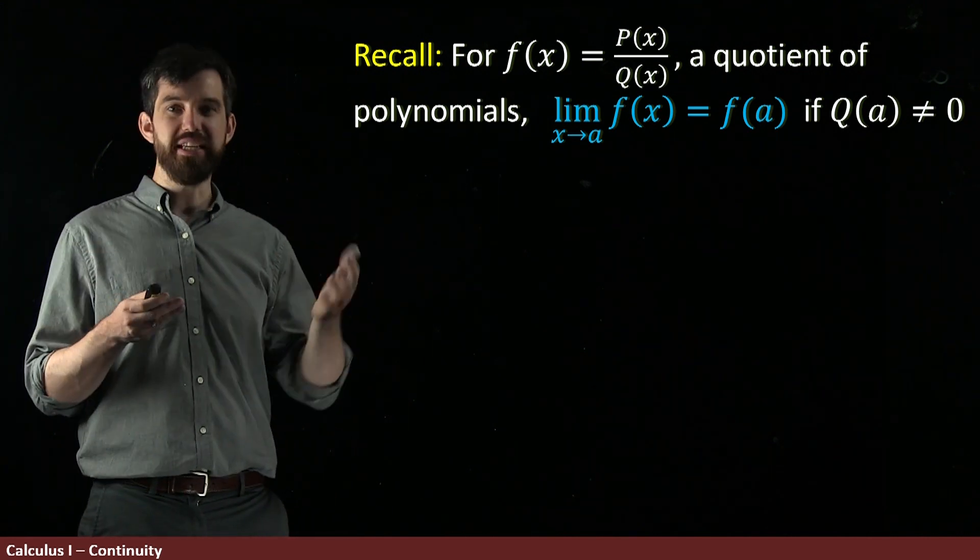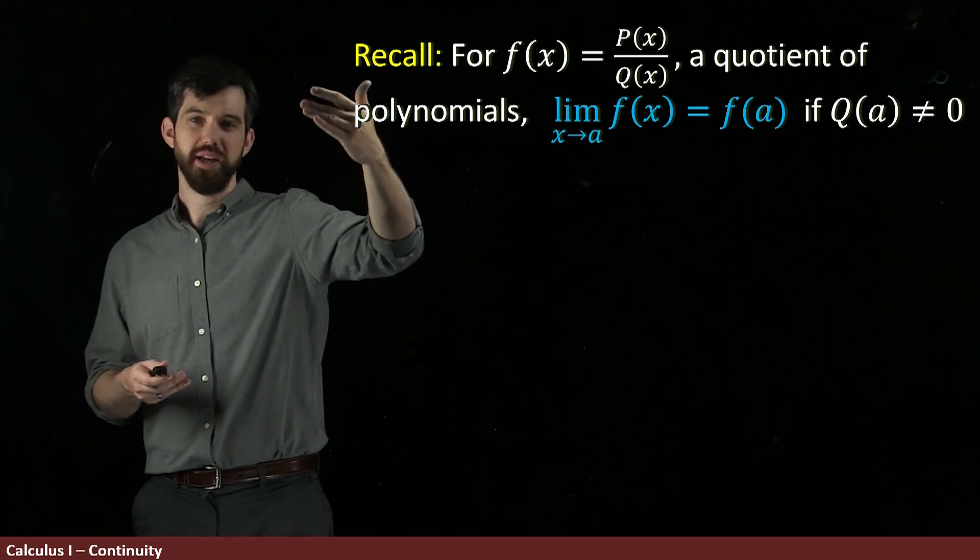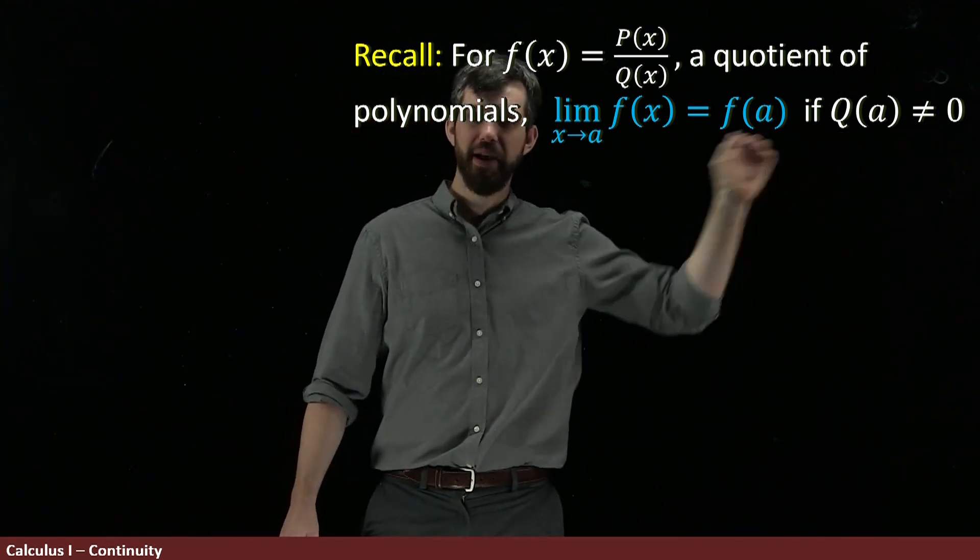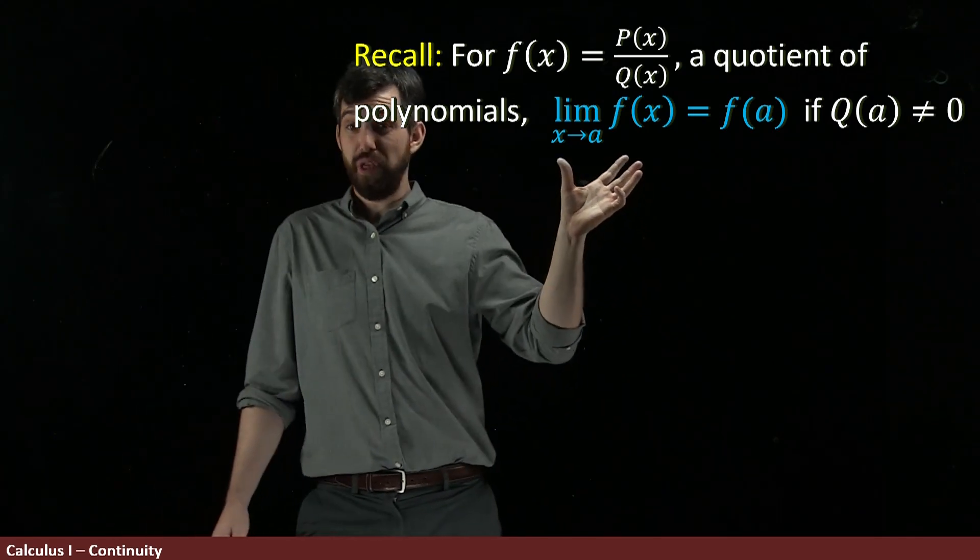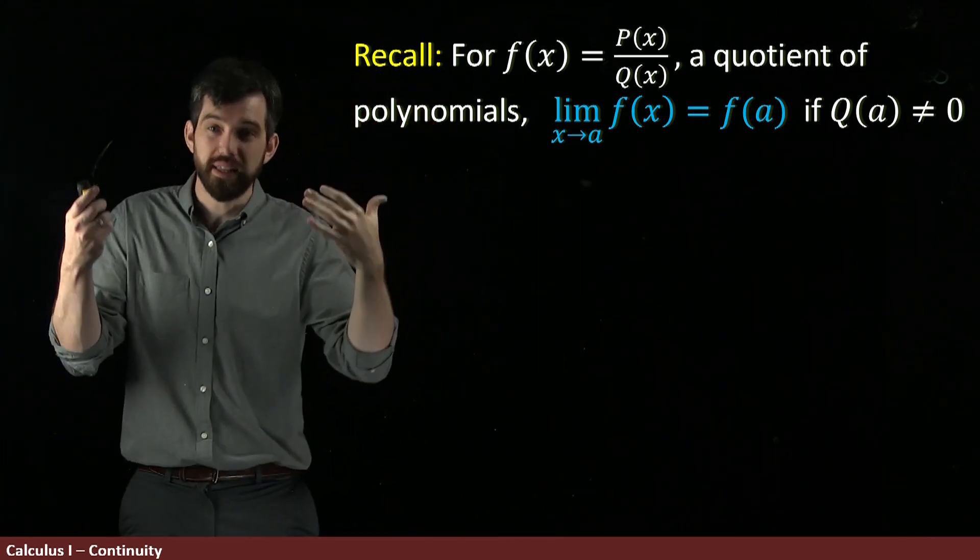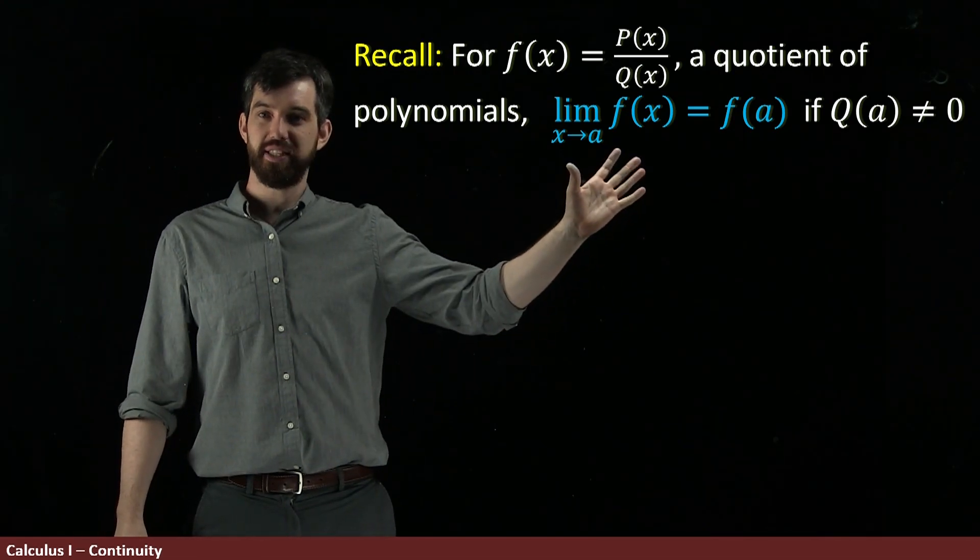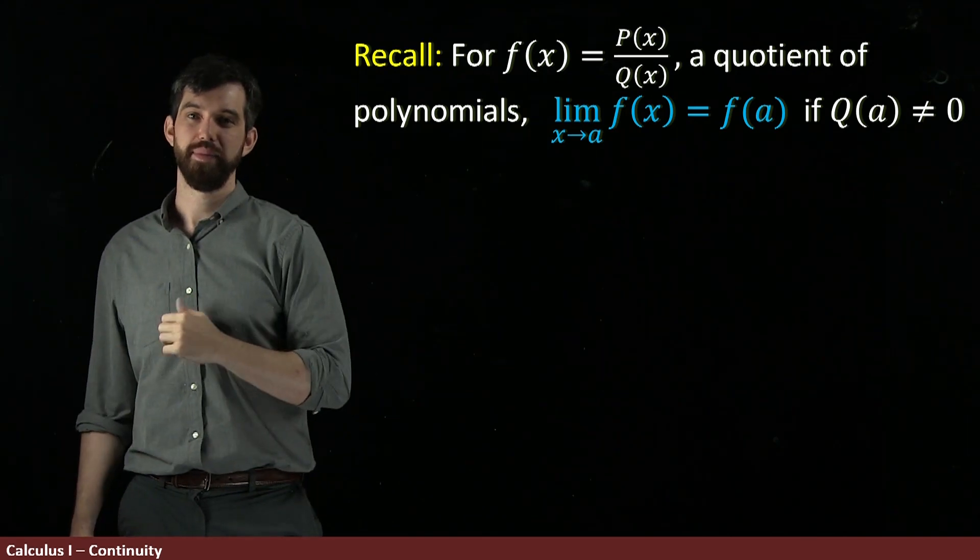We'd previously seen this fact about rational functions. Functions that are a polynomial on the top divided by a polynomial on the bottom, where we're making the additional claim that the quotient is not going to be equal to 0. And we'd previously said that for those types of things, by using limit laws, we applied our set of limit laws, we could see that this limit as x went to a of f of x was just the function value at a.